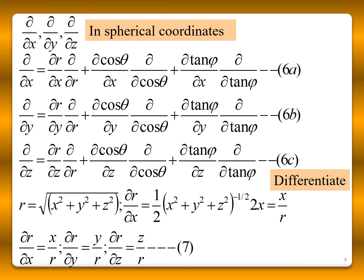Using these relations, we need to represent ∂/∂x, ∂/∂y, and ∂/∂z in terms of spherical coordinates, because the angular momentum components involve these partial derivatives. Taking the first one, ∂/∂x can be expressed via the chain rule as: (∂R/∂x)(∂/∂R) + (∂cosθ/∂x)(∂/∂cosθ) + (∂tanφ/∂x)(∂/∂tanφ). Similarly we do it for ∂/∂y and ∂/∂z.